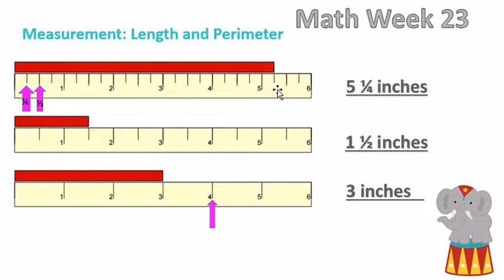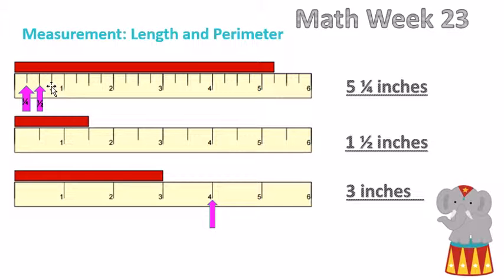These little marks represent quarter inches. At this first mark it represents one quarter inch, at this second mark it represents a half an inch, and at this mark it represents three quarters — because you have one quarter, two quarters, and three quarters here. Two fourths and one half is the same.